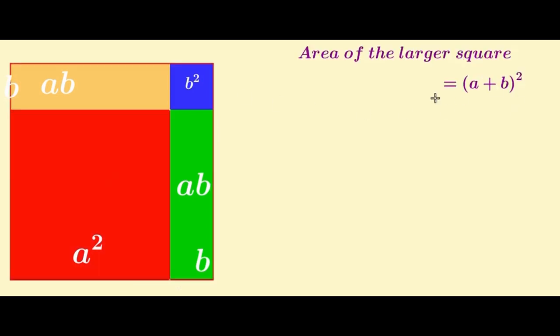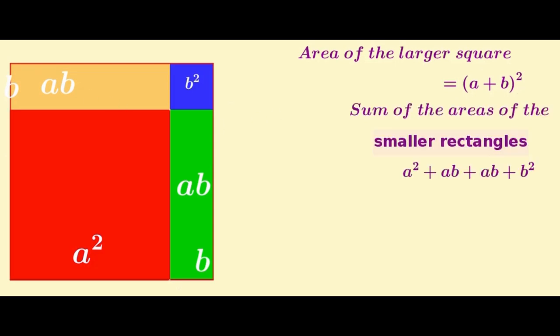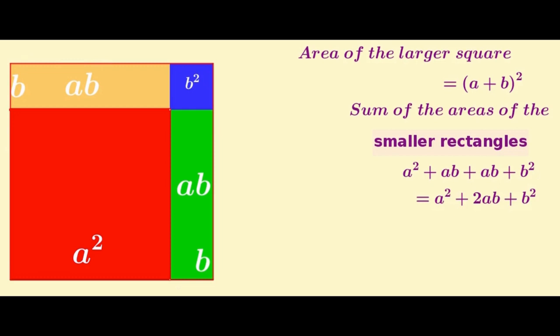Area of the larger square is (a plus b) all squared. Sum of the areas of the smaller rectangles: this is a squared, this is ab, this is ab, this is b squared. So a squared plus ab plus ab plus b squared, that is equal to a squared plus 2ab plus b squared.